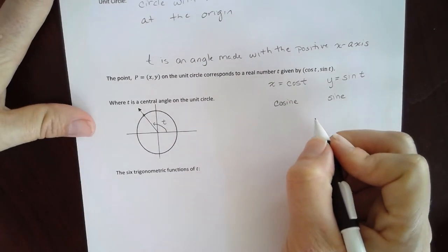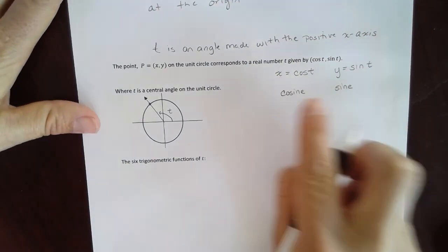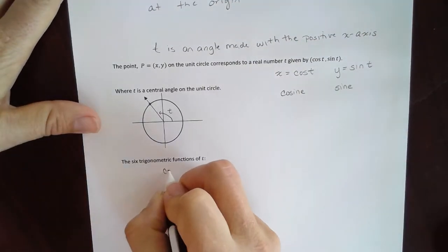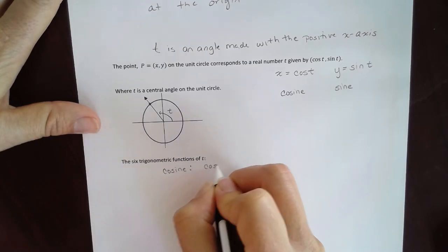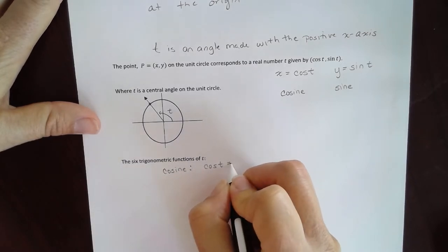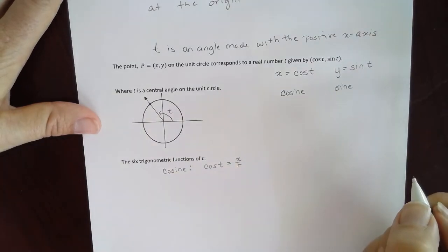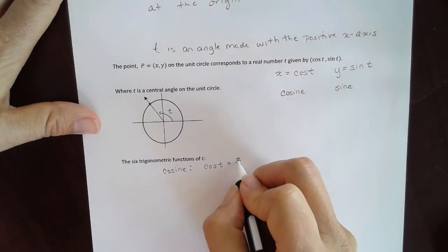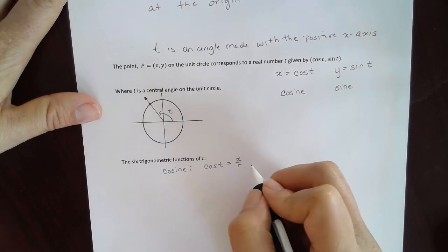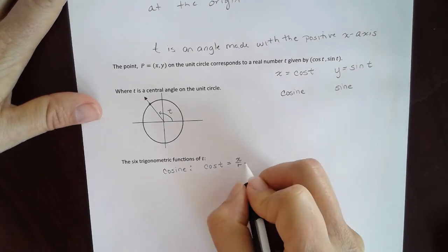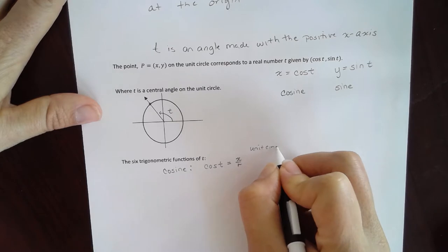So there are actually going to be six different trigonometric functions. We've got the cosine we were just talking about. So cosine of t will be equal to x over r, where r is the radius of the circle and x is an x coordinate. Now in the unit circle, the radius is always one. So on a unit circle, it's just going to be equal to that x value.